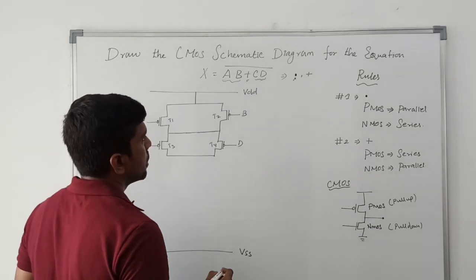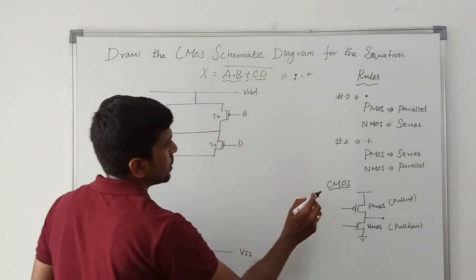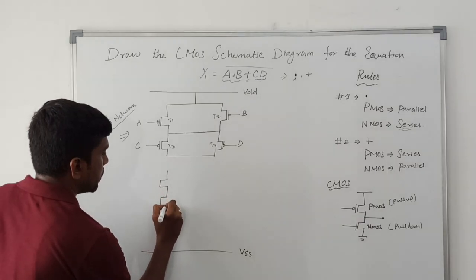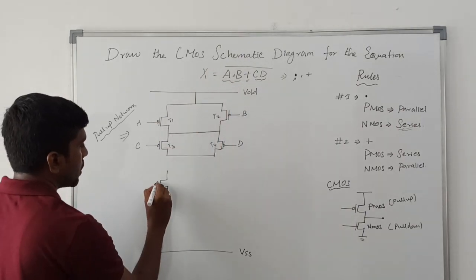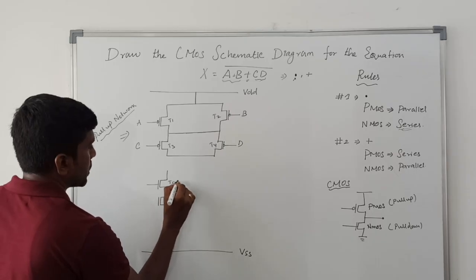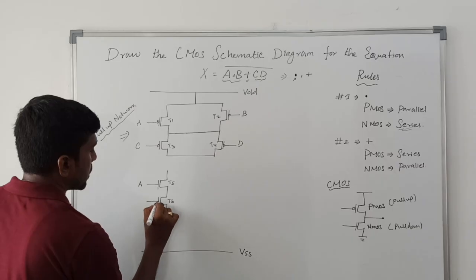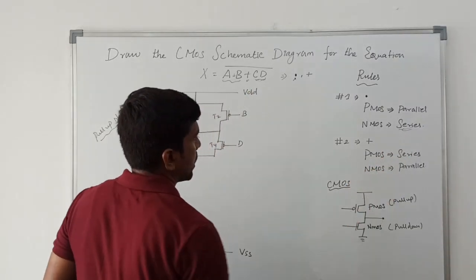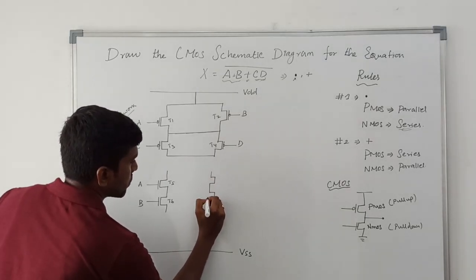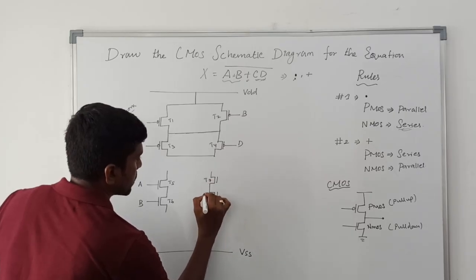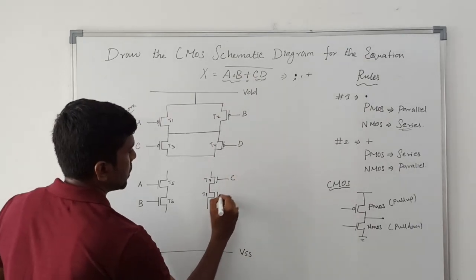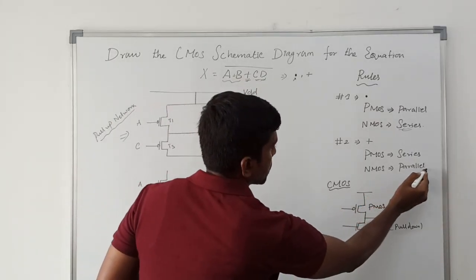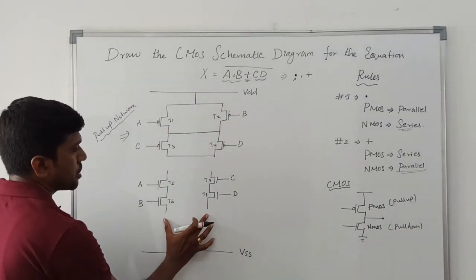Now drawing the pull-down network. For A dot B, the dot operation means NMOS transistors are connected in series. Two variables A and B are present. T5 transistor input is A and T6 transistor input is B, connected in series. Then for C dot D: T7 transistor input is C and T8 transistor input is D. The plus operation means these two NMOS networks are connected in parallel.